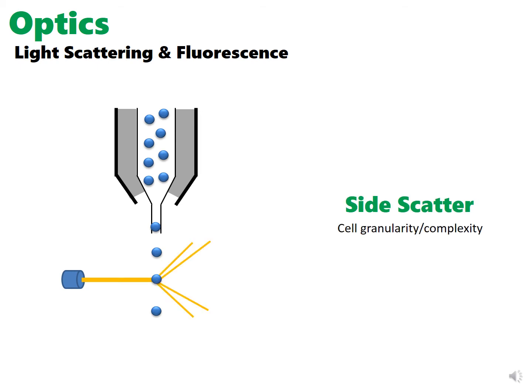Light is not only scattered forward by the cell, but in all directions by both the cell as well as its components. This side scatter is picked up by a side scatter detector. Side scattering signal is used to describe the granularity or complexity of a cell. Highly granular cells with a large amount of internal complexity, such as neutrophils, will produce more side scattered light than less complex cells.